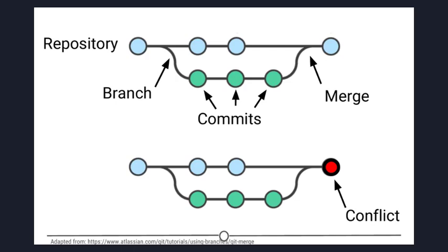Then it merges the files together. Independent edits of the same file are incorporated into a single unified file. Independent edits are identified by Git and are brought together into a single file with both sets of edits incorporated.